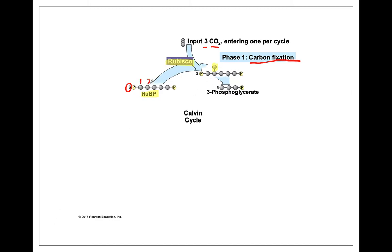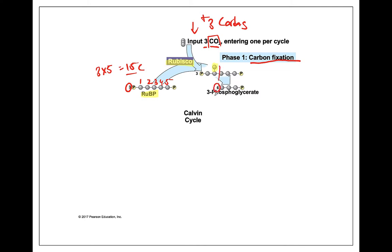Let's count carbons. We've got five carbons on a molecule of RuBP, and there are three of these molecules, so three times five gives us 15 carbons before we start the cycle. We're going to put three carbons in — three molecules of CO2 — so we should end up with 15 plus 3 equals 18 carbons. This extremely unstable six-carbon molecule immediately breaks into six molecules of 3-phosphoglycerate. Six molecules times three carbons each equals 18 carbons — all carbons are accounted for.